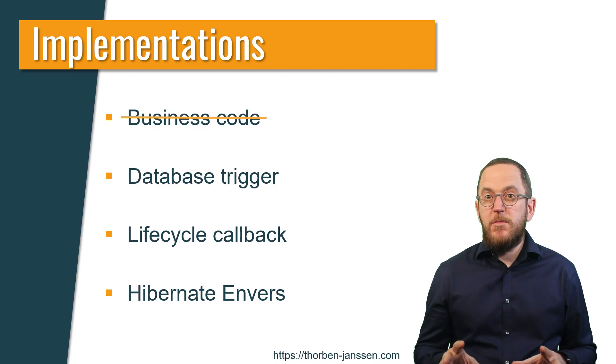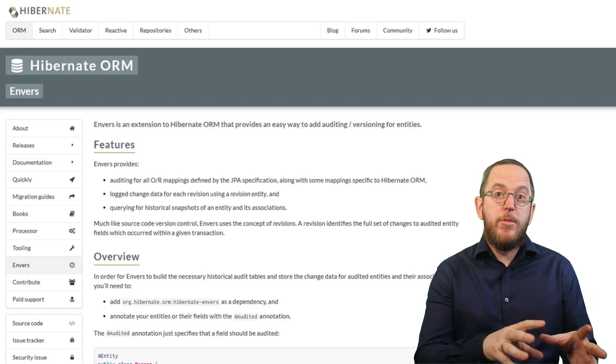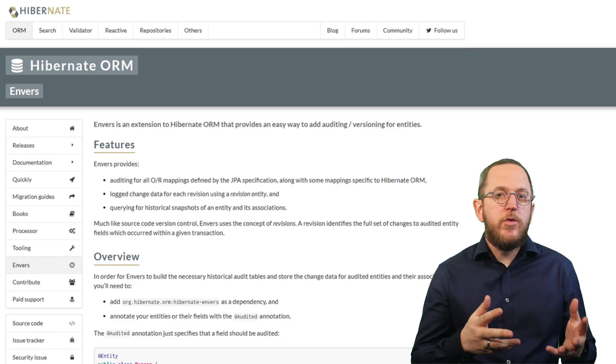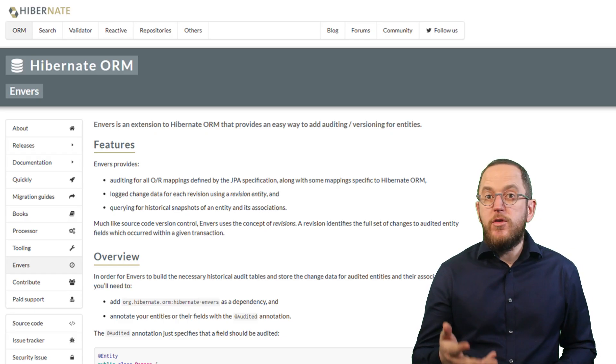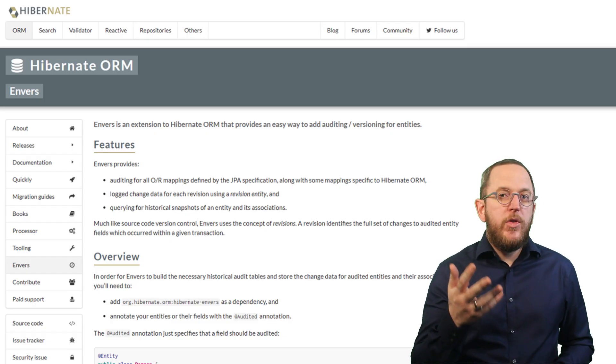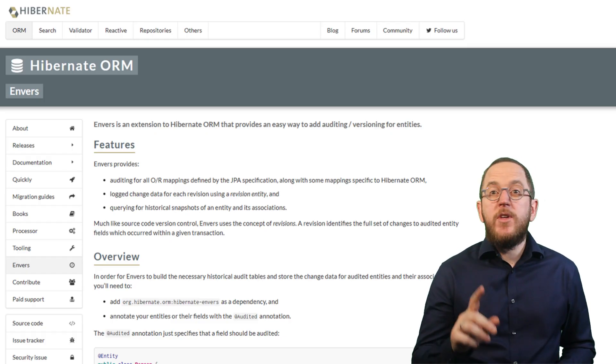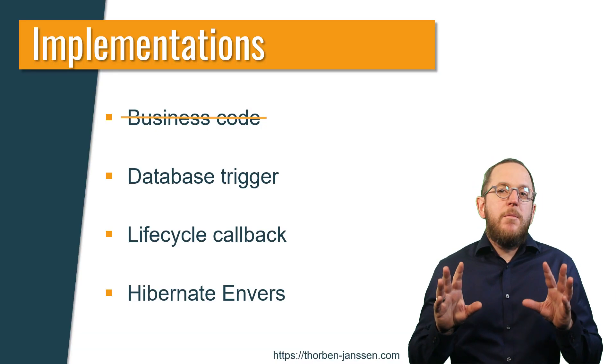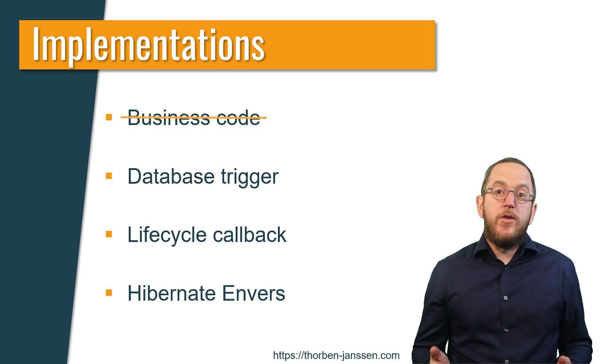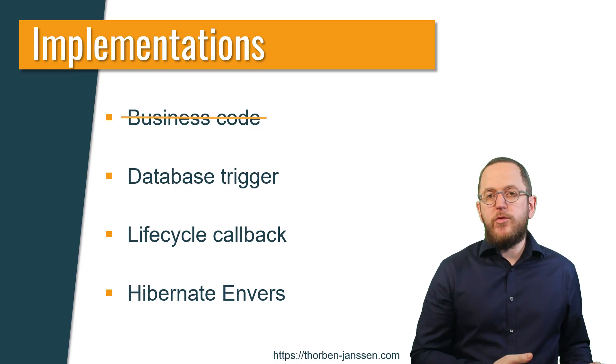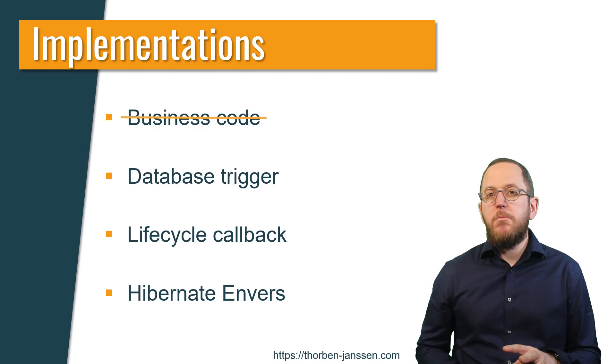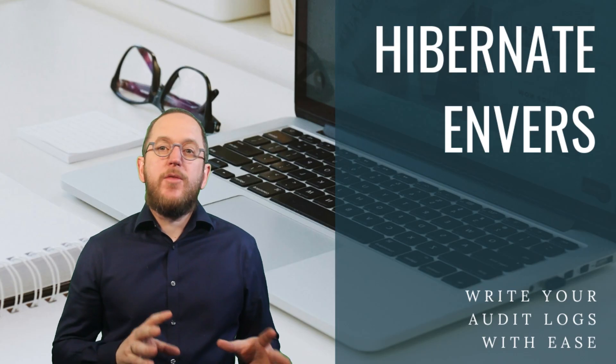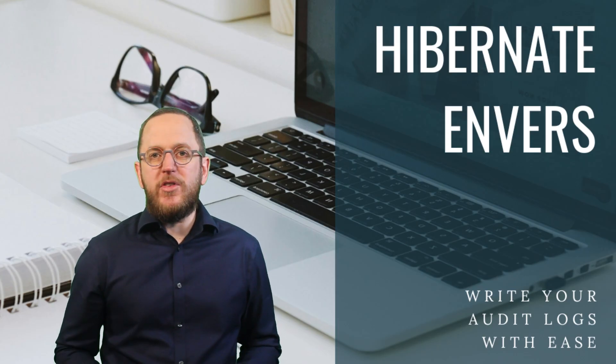You might now expect it to run into the same issues we discussed earlier. But the important difference is that the same team develops Hibernate ORM and Hibernate Envers. So they know exactly how to solve those problems and can ensure that their solution works with every new Hibernate version, even if it might not be 100% compliant with the specification. Based on my experience, Hibernate Envers is the best solution for most projects that already use Hibernate ORM or Spring Data JPA. And it's so popular that I have recorded an entire course about it for the Persistence Hub.